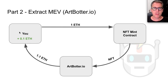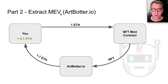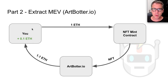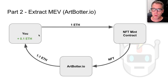We will have 0.1 ETH extra at the end of this transaction. When we talk about extractable value, we are talking about transactions which are intrinsically valuable that anyone can run on the Ethereum network, but if you are the one to do so, you end up with more assets at the end than when you started.